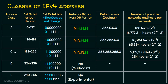In class C, we have 3 octets as the network portion and only 1 as the host portion. Out of these 3 network octets — that is 8 plus 8 plus 8, which is 24 bits — 3 bits in the first octet are reserved for identifying this class. So out of 24 bits, subtracting 3 bits gives 21 bits. The number of networks possible in class C is 2 power 21.